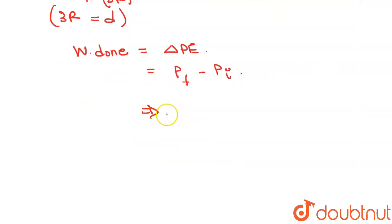That means negative of G capital M small m over d minus negative G capital M small m over R. Okay, so this will be minus G capital M small m over